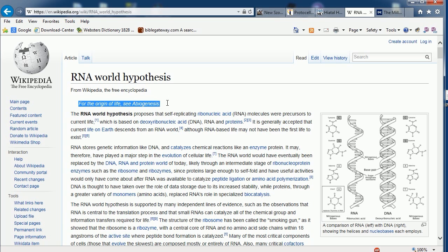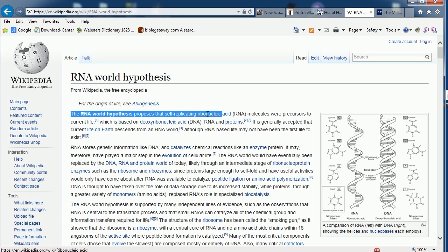As much as you evolutionists out there would love to say that evolution is not abiogenesis, let's look. The RNA world hypothesis proposes that self-replicating ribonucleic acid molecules were precursors to current life. Wouldn't that be evolution? Yes, it would be evolution. So shut your mouth with the abiogenesis isn't evolution crap. It is.